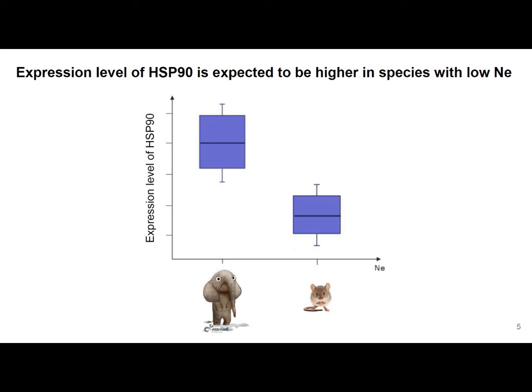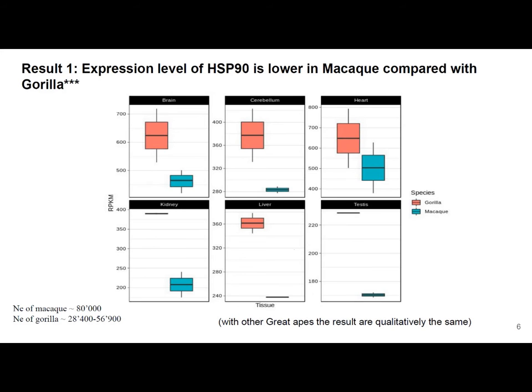Our first expectation is that the expression level of Hsp90 is higher in species with low effective population size, because it should buffer high mutation burden. To check this, we analyzed expression data for primates, and we see that the expression level of Hsp90 is higher in gorilla compared to macaca, which has a higher effective population size. So our first result is in line with our expectation.